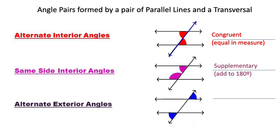We have alternate exterior angles, and those angles are going to be in the outside region — in the exterior of the parallel lines. They are on alternating sides of the transversal: one is high, one is low; one is on the right and one is on the left. Alternate exterior angles are congruent, or equal in measure.